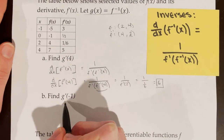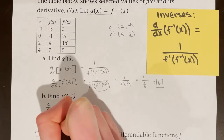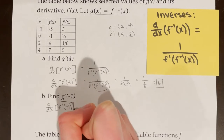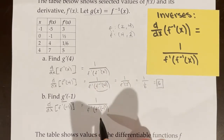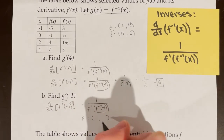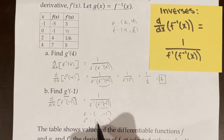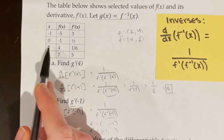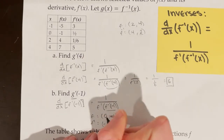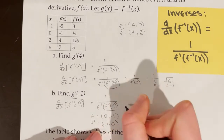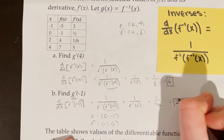Now I'll find g prime of negative 1 using a similar process. Since g equals f inverse, I'm really finding the derivative of f inverse at negative 1, which equals 1 over f prime of f inverse of negative 1. To find f inverse of negative 1, I look for a point on regular f with y coordinate negative 1. From the table, at x equals 0 the y coordinate is negative 1, so the point (0, negative 1) on f becomes (negative 1, 0) on f inverse. Plugging in 0, and seeing f prime of 0 equals 1 half, the result is 1 over 1 half, which equals 2. So g prime of negative 1 equals 2.